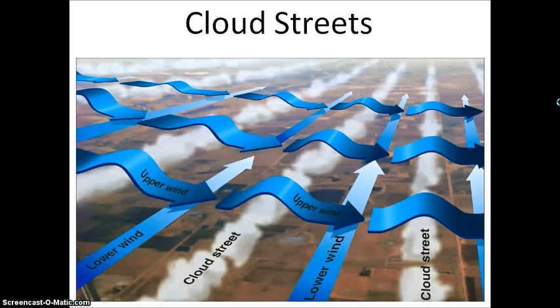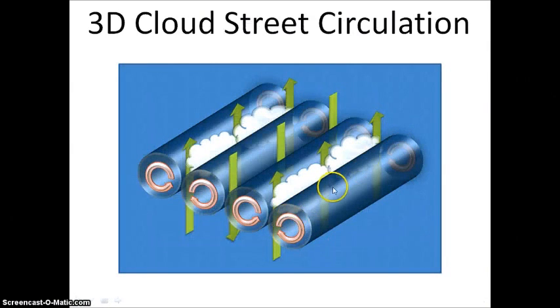Okay, cloud streets. This is a very complex subject on how these form. And honestly, there hasn't been very much observation in the air about how these form. But we do have a general good idea of how these form. What happens is you have upper wind that is moving faster and often in a perpendicular direction, although it has happened with it being in the same or opposite direction.